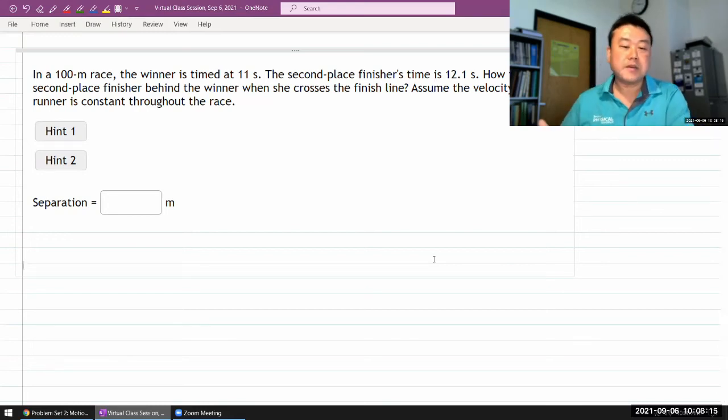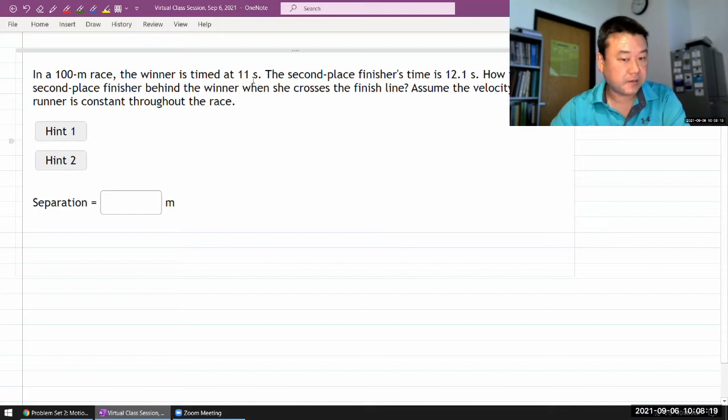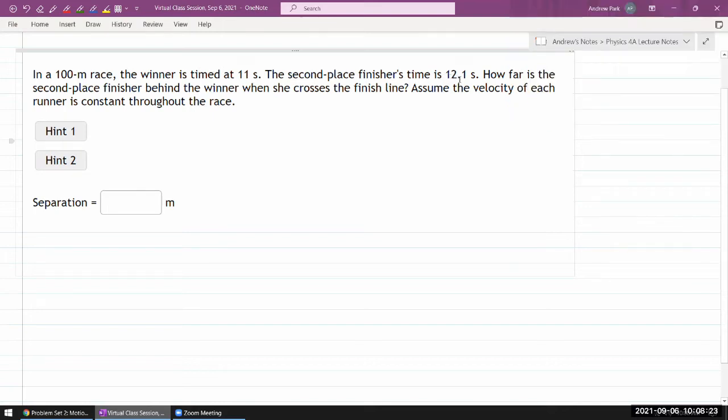This is the question. It says: In a 100-meter race, the winner is timed at 11 seconds, the second-place finisher is timed at 12.1 seconds. It asks, how far is the second-place finisher behind the winner when she crosses the finish line?